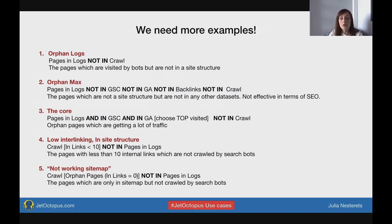The core — pages in logs, in Google Search Console, and in Google Analytics, but not in crawl. These are orphan pages getting a lot of traffic, so study them deeply and consider taking them back into the site structure. Low interlinking segment — pages with less than 10 internal links which are not crawled by search bots. Not working in sitemap — pages which are only in the sitemap but not crawled by search bots.